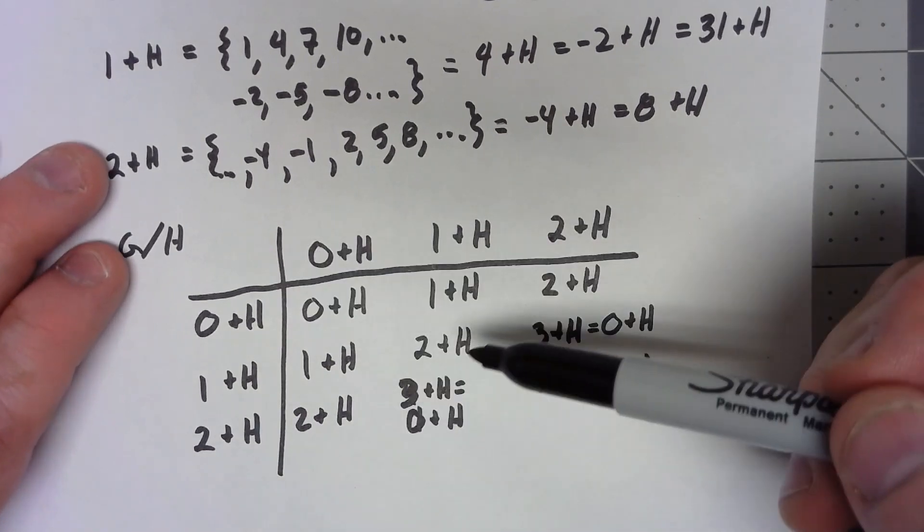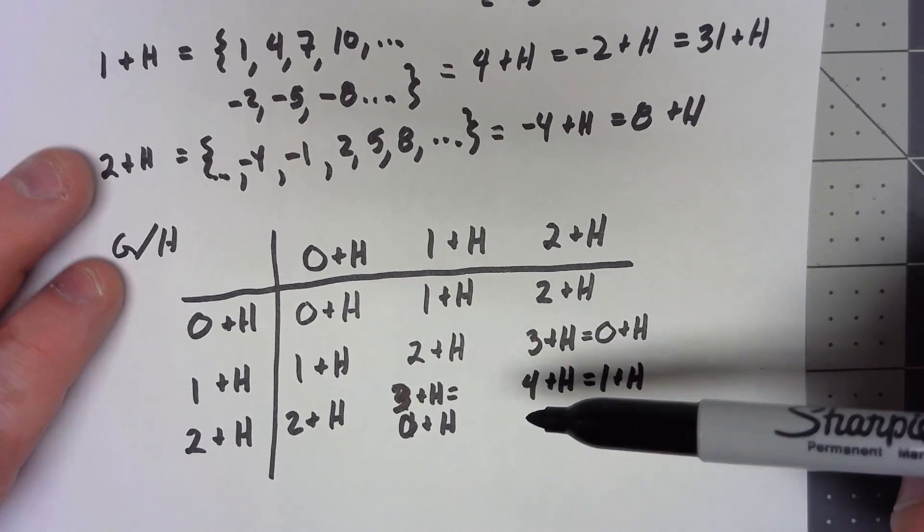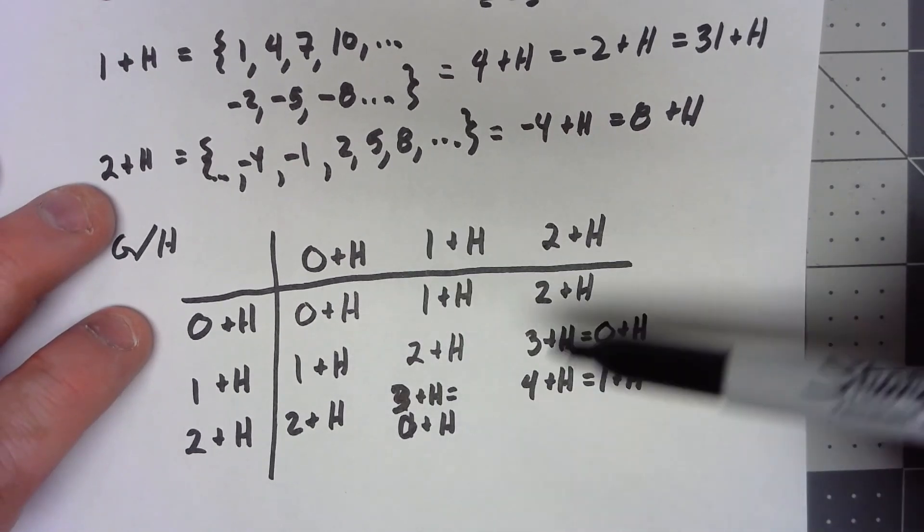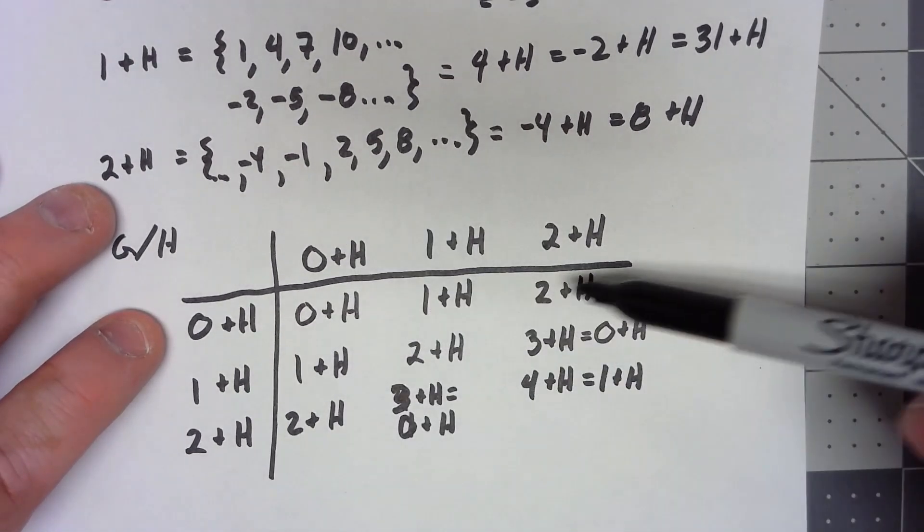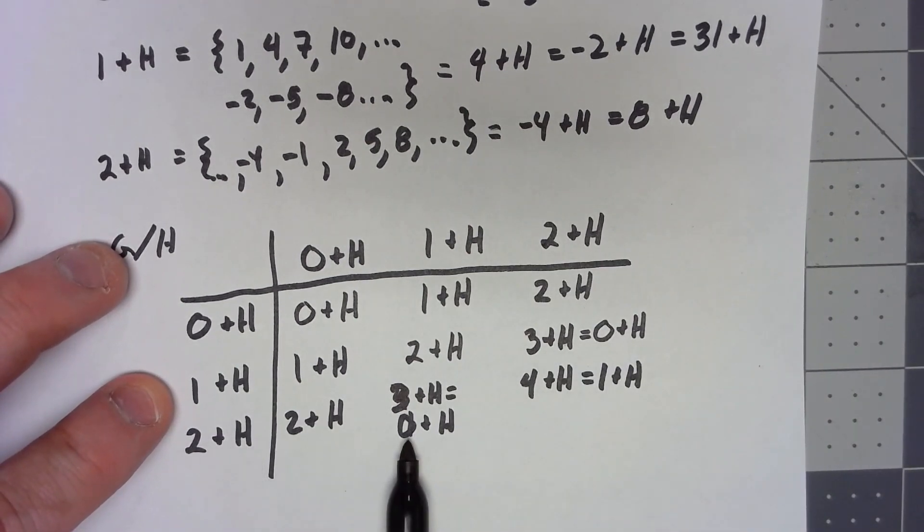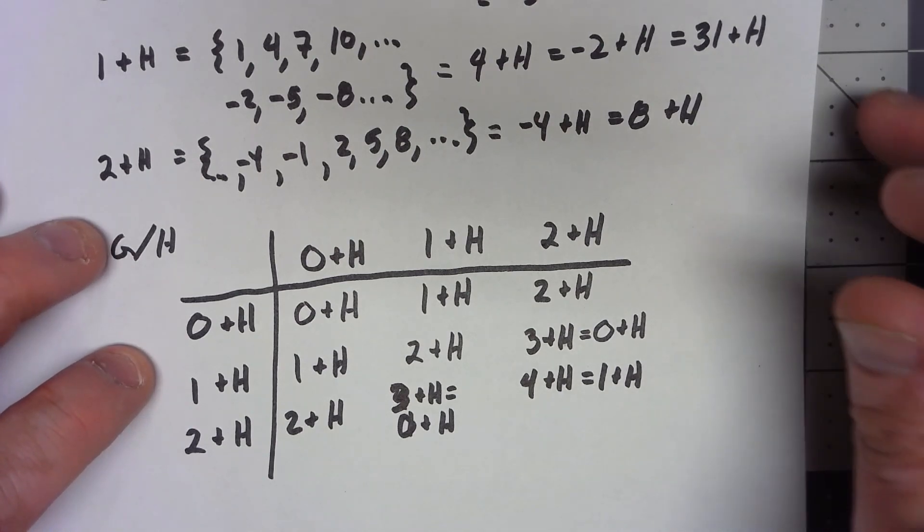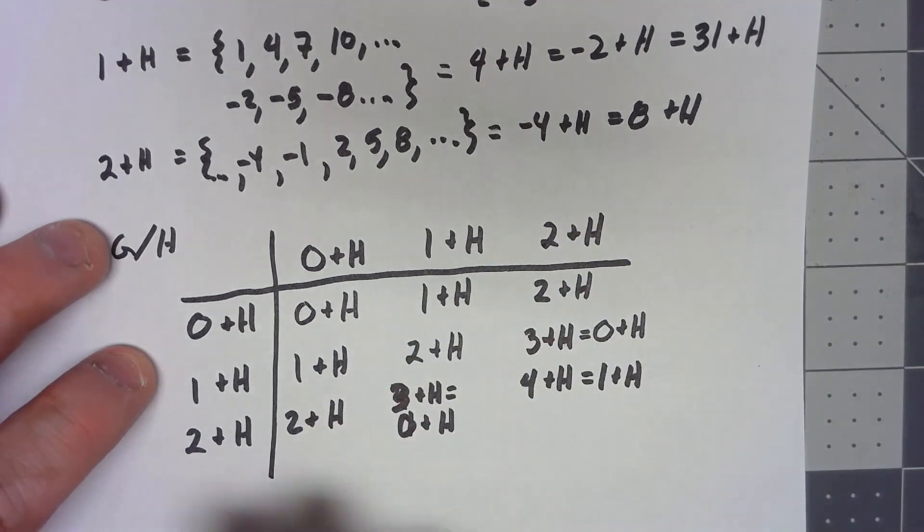And just looking at this Cayley table, now certainly one example is not a proof, but looking at it we can see that this thing is a group. The 0+H is my identity, every element has its own inverse, it's abelian, it's commutative, it's associative, all the group properties are there. But once again, because this was an abelian group, it was just a little bit trivial.